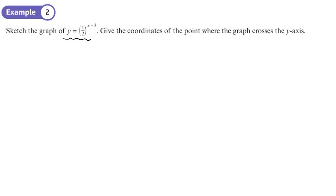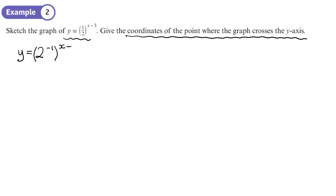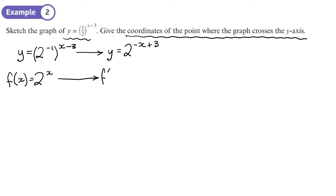We now need to sketch a graph and find where it crosses the y-axis. We can write one-half as 2 to the power negative 1, then multiplying the powers gives y equals 2 to the power negative x plus 3. If we think of f(x) as the graph of 2 to the power x, then f(negative x plus 3) gives us the graph of 2 to the negative x plus 3.